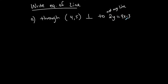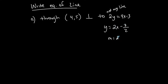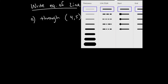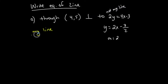I'm using the given equation to find the slope of my line. It's not in slope-intercept form, so I need to isolate y by dividing everything by 2. That gives y equals 2x minus 3/2. The slope of that line is 2. But this is not the slope of my line — my line goes through the point (4, 5) and is perpendicular to this line.